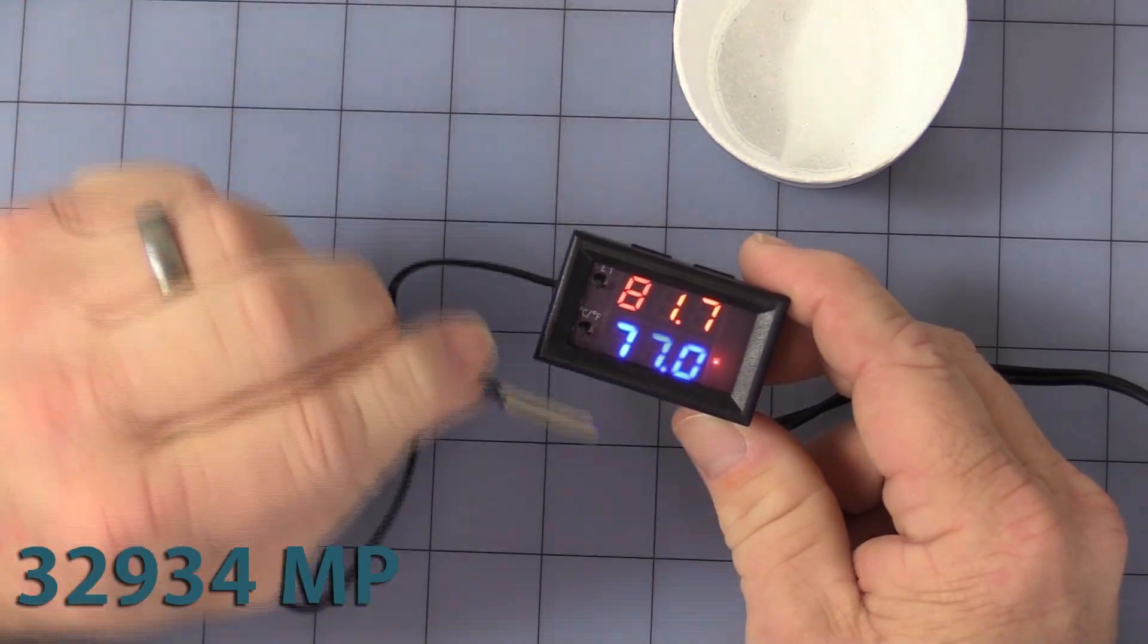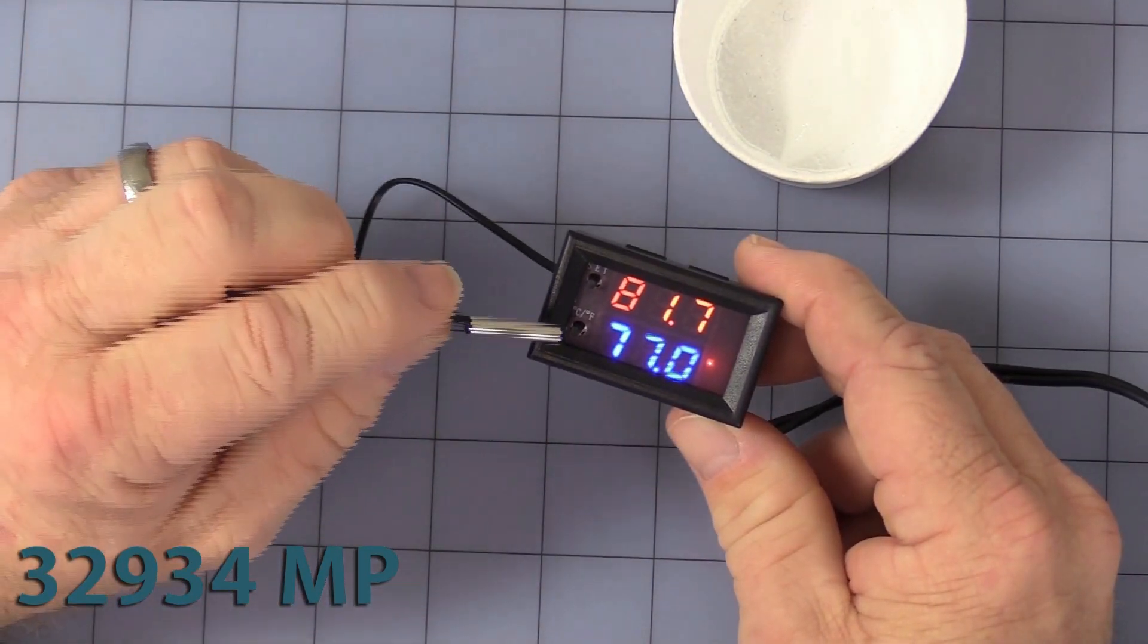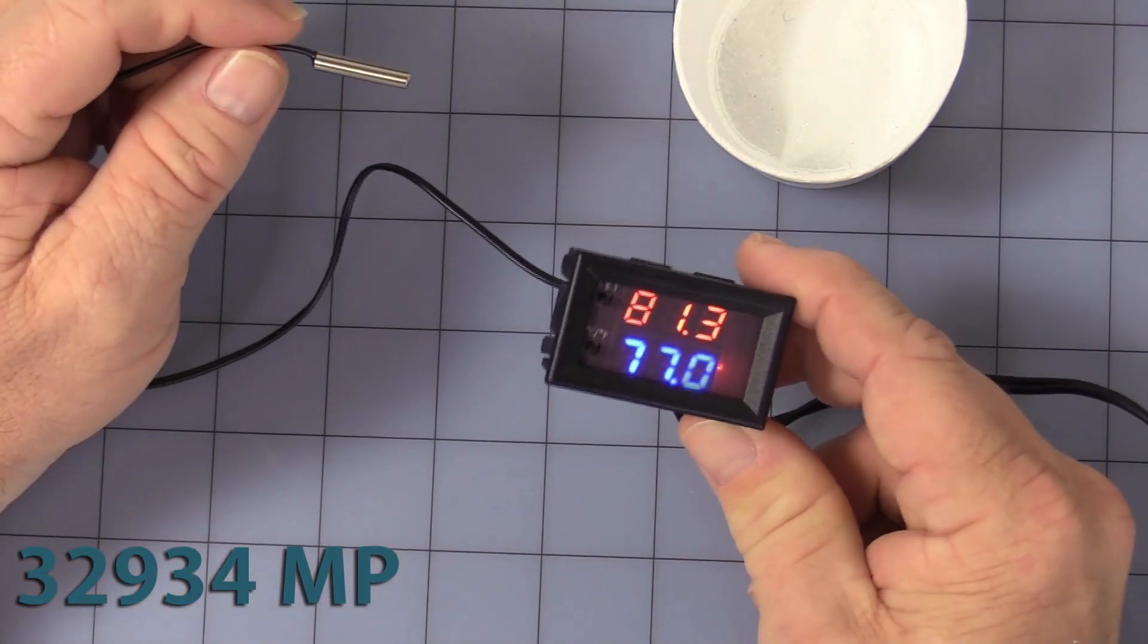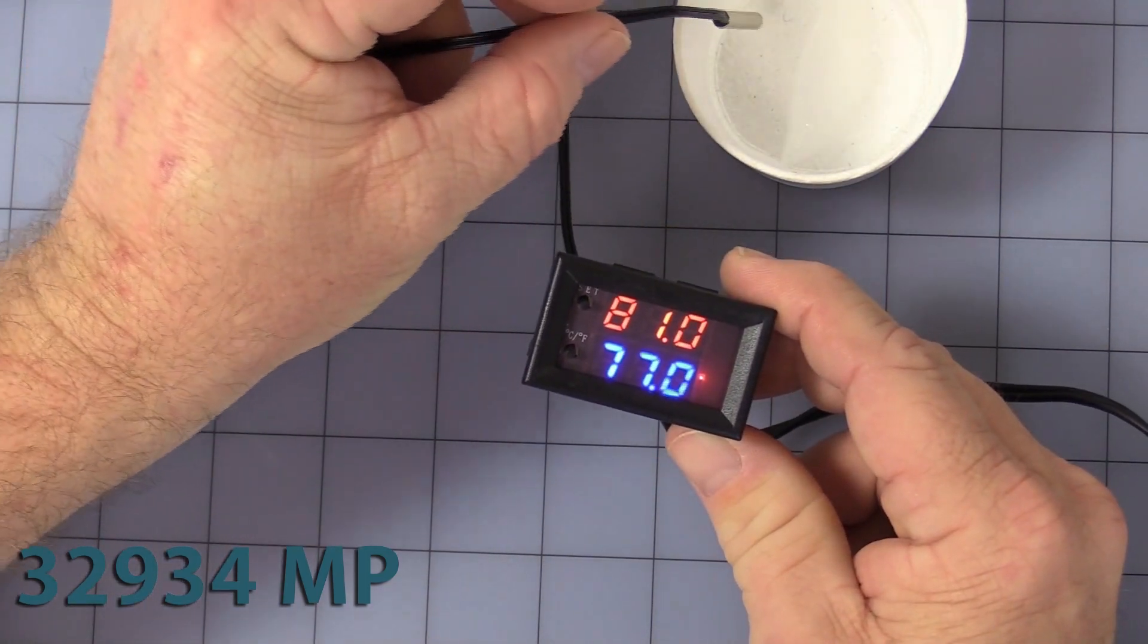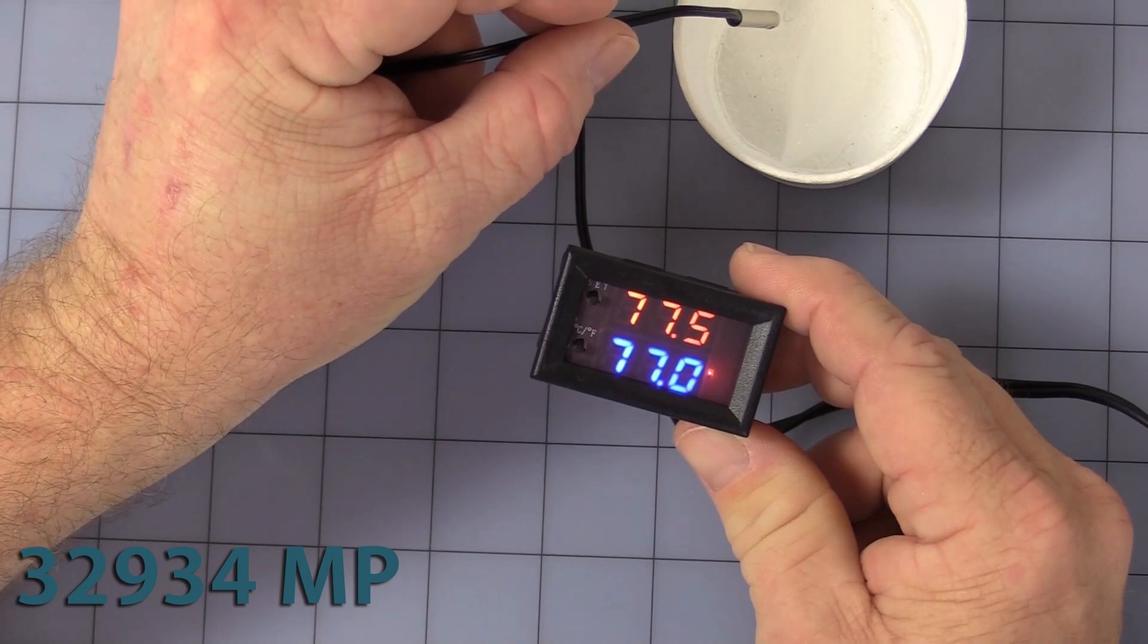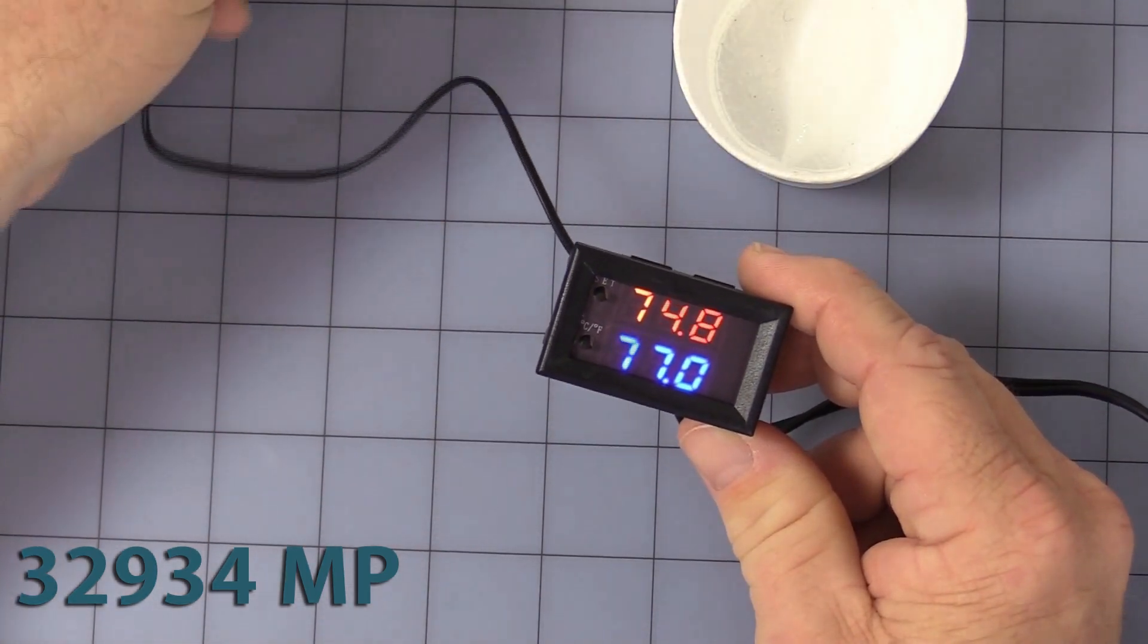It's set at 77 degrees as the off point. So, we're going to have to cool it down to 77 degrees Fahrenheit. I have a little bit of ice water here to cool it. And as you can see, the relay turns off.